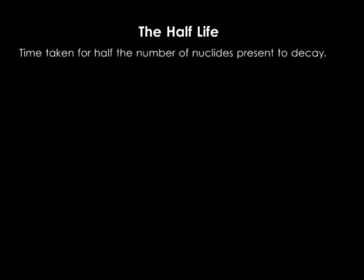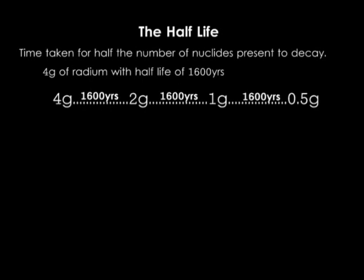Half-life. The rate of decay of any radioactive material depends on the number of nuclides present. The time taken for half the number of nuclides initially present in a radioactive sample to decay is called its half-life. Consider 4 grams of radium whose half-life is 1600 years. After 1600 years, 2 grams will have decayed, so 2 grams remain. After another 1600 years, half of the 2 grams will decay, leaving 1 gram. After another 1600 years, half of 1 gram decays, leaving 0.5 grams, and so on. This can also be expressed as a percentage.